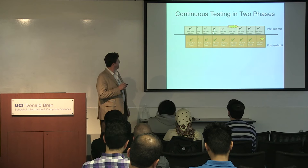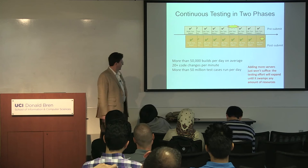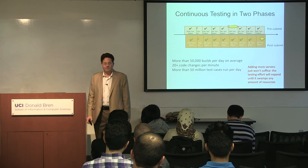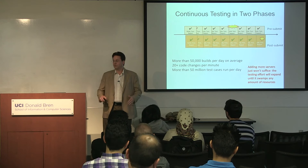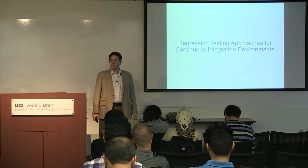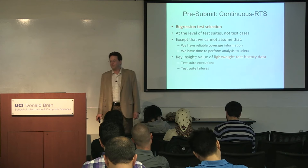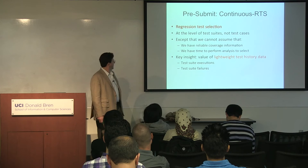There's a lot of testing going on — pre-submit and post-submit. 50,000 builds per day, 20 code changes per minute, 50 million test cases per day. Someone might say just use bigger server farms, but the problem is the more resources you add, the faster testing increases to use up those resources — you just run more tests until you've used them up and there are the same delays. So we want to address that, leading us to the topic of today: regression testing approaches for continuous integration environments.